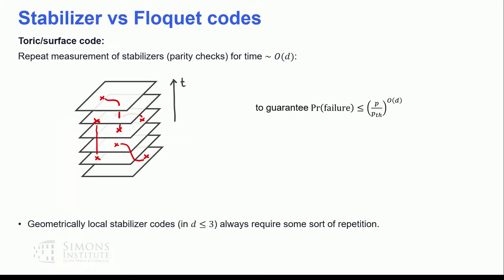When it comes to quantum error correction with stabilizer codes, the paradigmatic example is the Toric code. We have to measure the stabilizers of the Toric code for an amount of time that scales with the distance of the code if there is any probability of measurement errors. These measurements project us onto a subspace from which it is convenient to perform error correction back to the ground state.